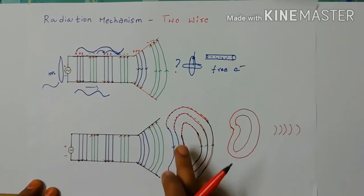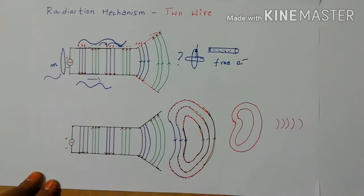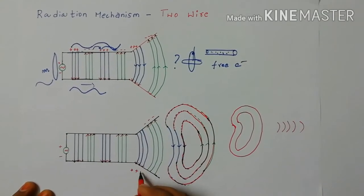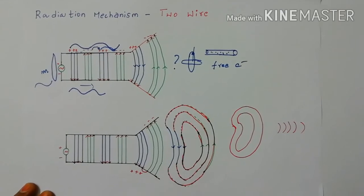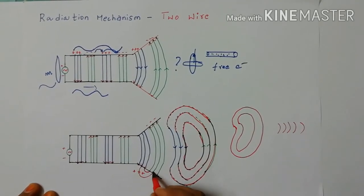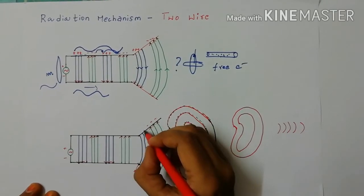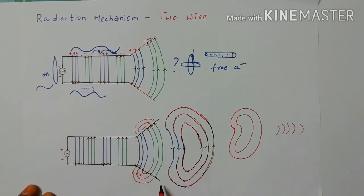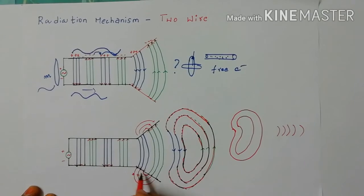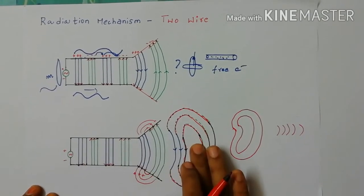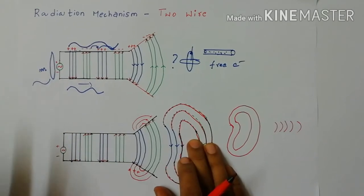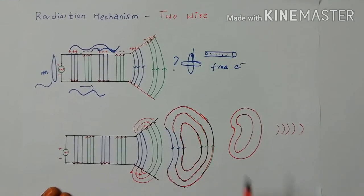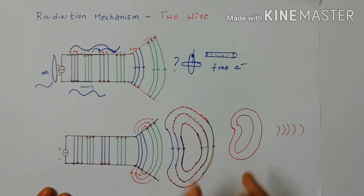These waveforms start their journey in free space and propagate towards the receiving antenna. Three negatives and three positives are present — each positive gets attracted towards a negative, forming closed loops in free space. If they were present along the wire this can't happen, because they are bounded to the wire. But once they enter free space there is nothing to control or bound them, so they become free and immediately form closed loops.